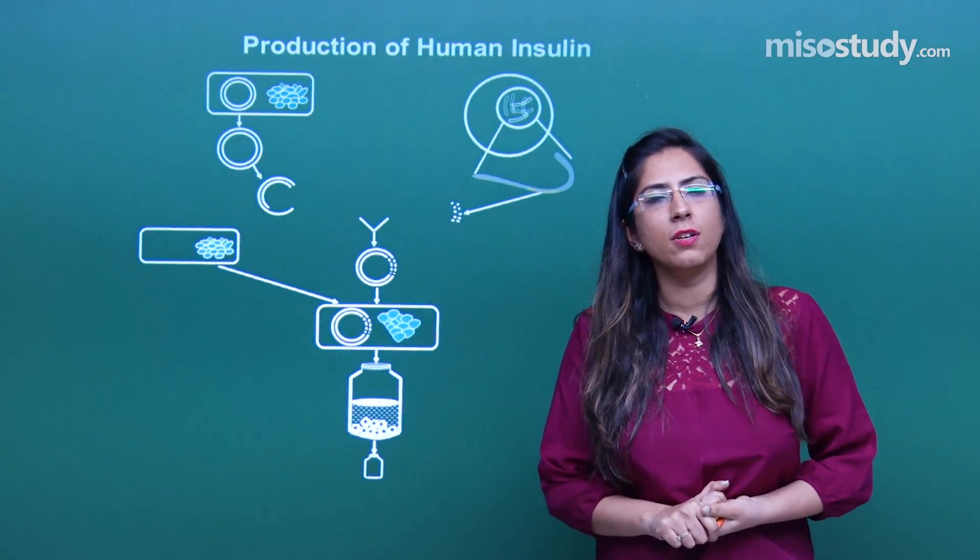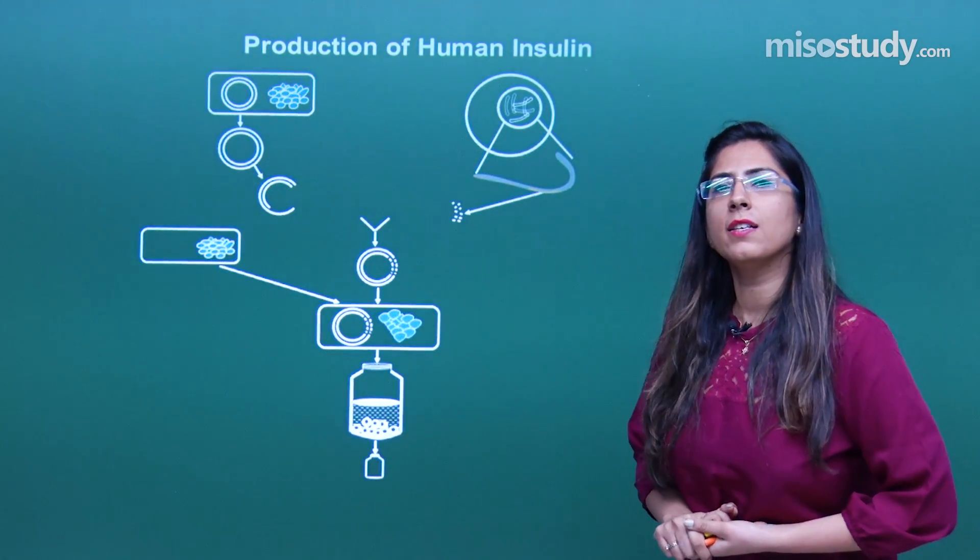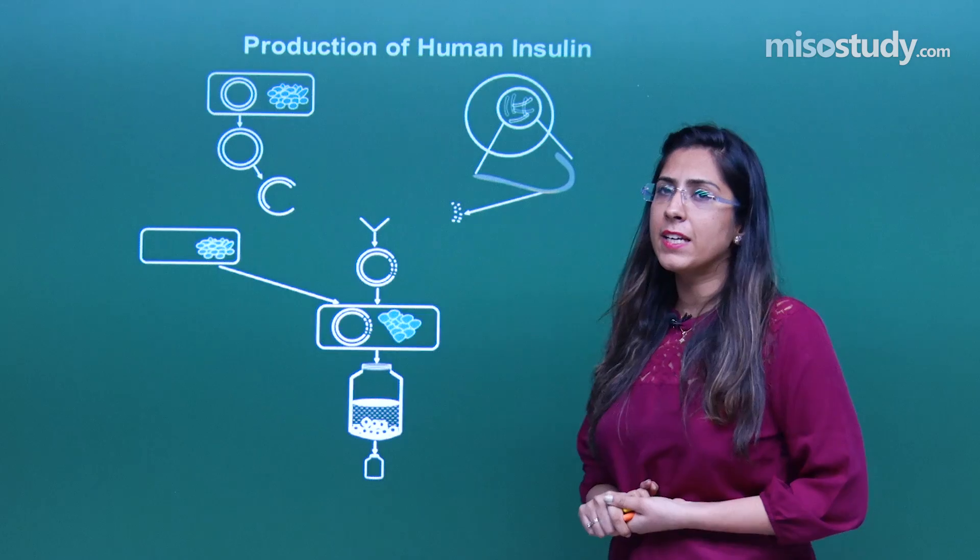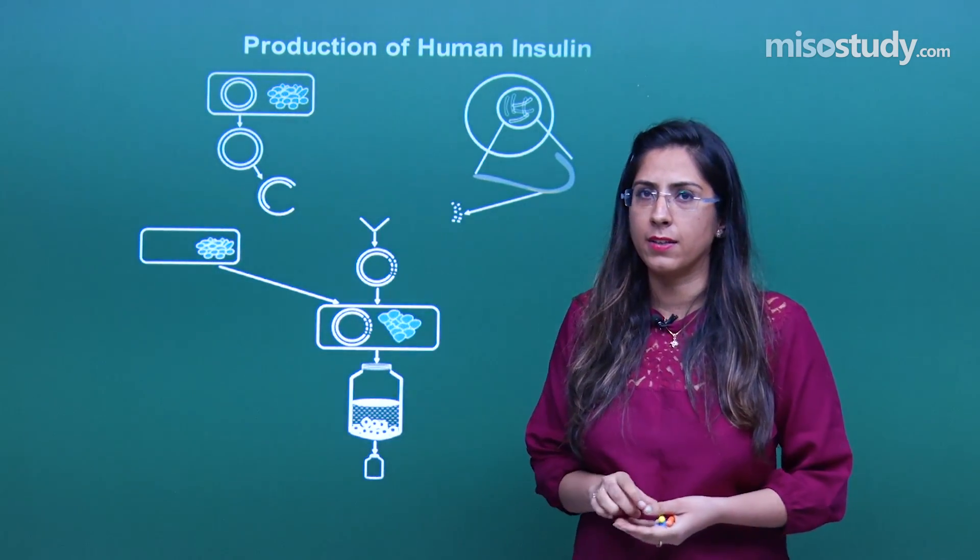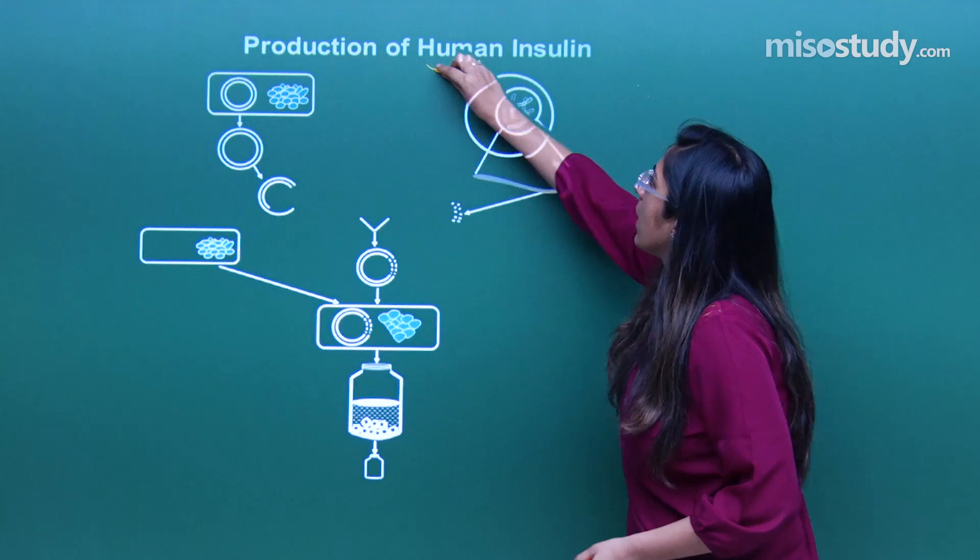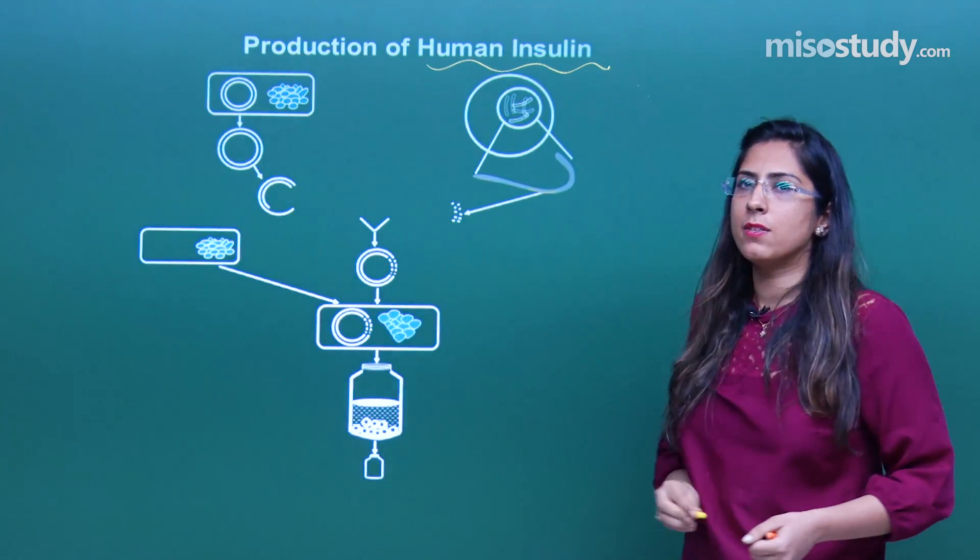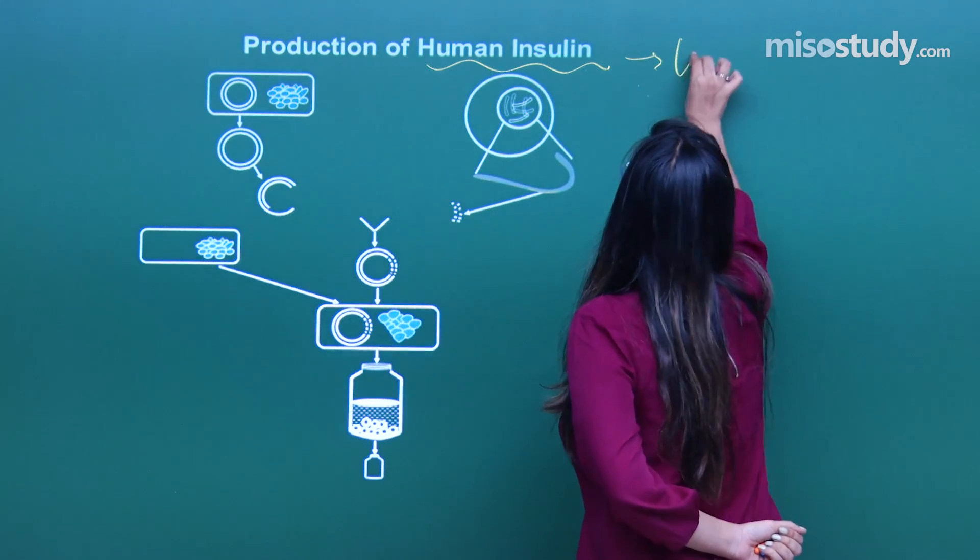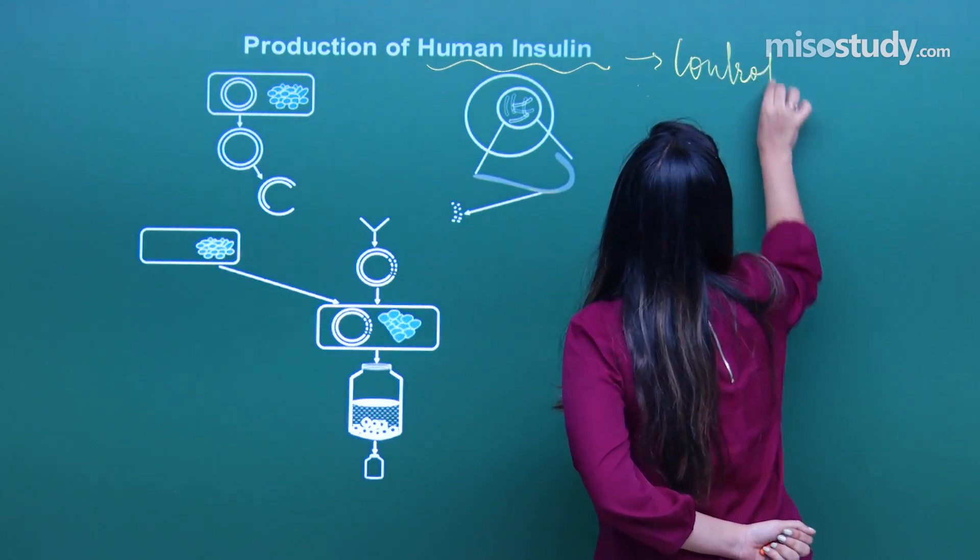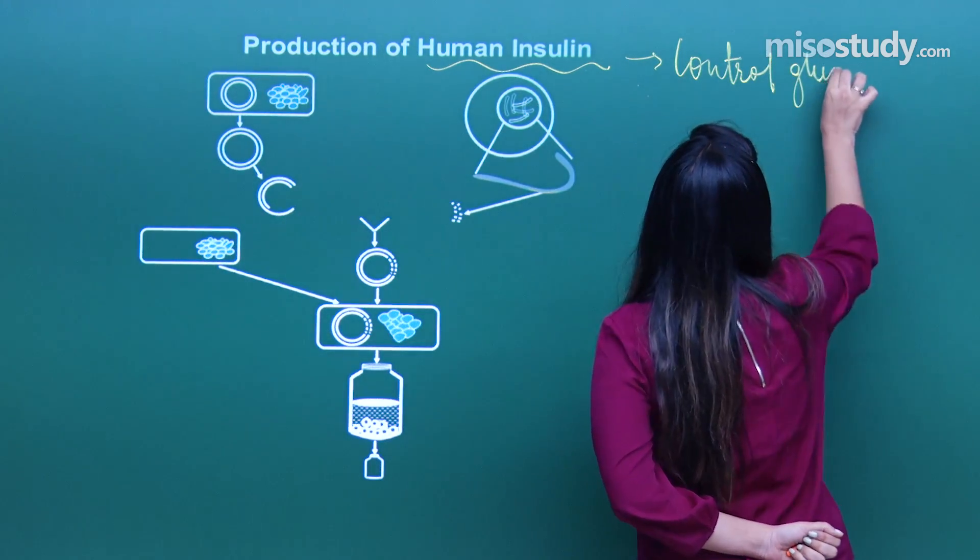Now let's talk about production of insulin. Insulin is very important as it is secreted by pancreas from beta cells of islets of Langerhans. Now tell me one thing, what is the function of insulin? Function of insulin is control of glucose in blood.